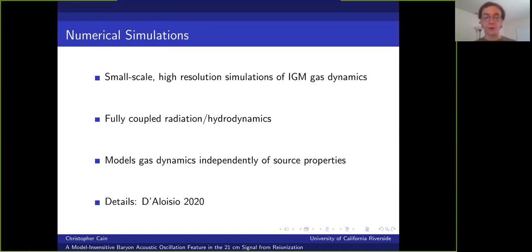Importantly, they include the full coupling between radiative transfer and hydrodynamics, which is needed to accurately capture how the gas responds hydrodynamically to photo heating by the radiation. The stream velocity itself is modeled by a constant offset between the gas and the dark matter in a fixed direction. And for more details on the methodology used here, I refer the interested listener to D'Aloisio 2020.